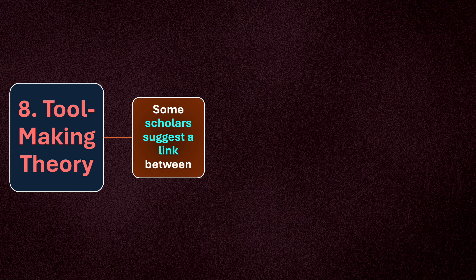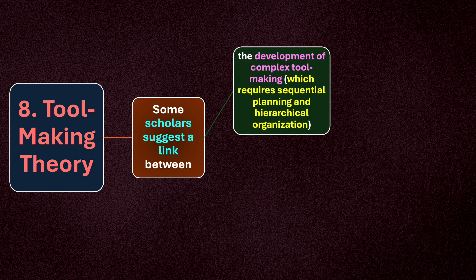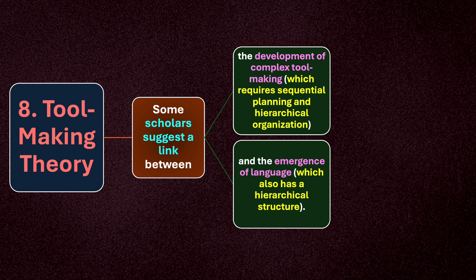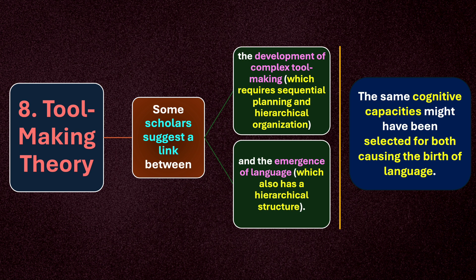That is point number eight: tool making theory. Some scholars suggest a link between the development of complex tool making — which requires sequential planning and hierarchical organization — and the emergence of language, which also has hierarchical structure. The same cognitive capacities required for complex tool making might have been selected for both, causing the birth of language. The talent of making tools might have contributed to humans developing language.